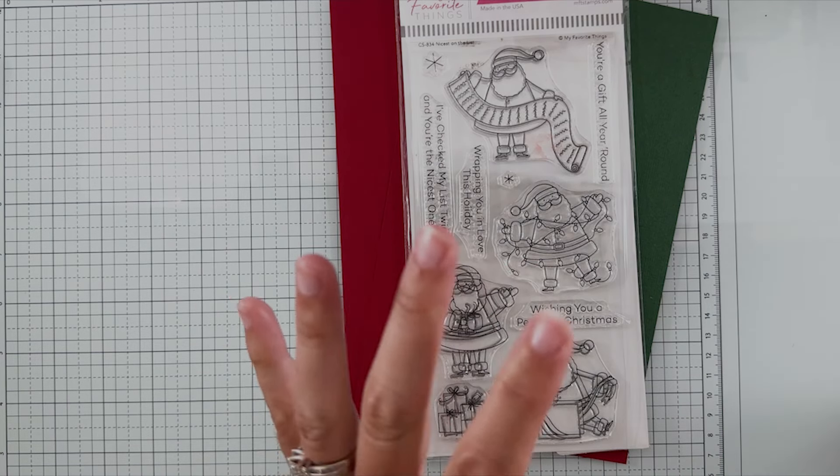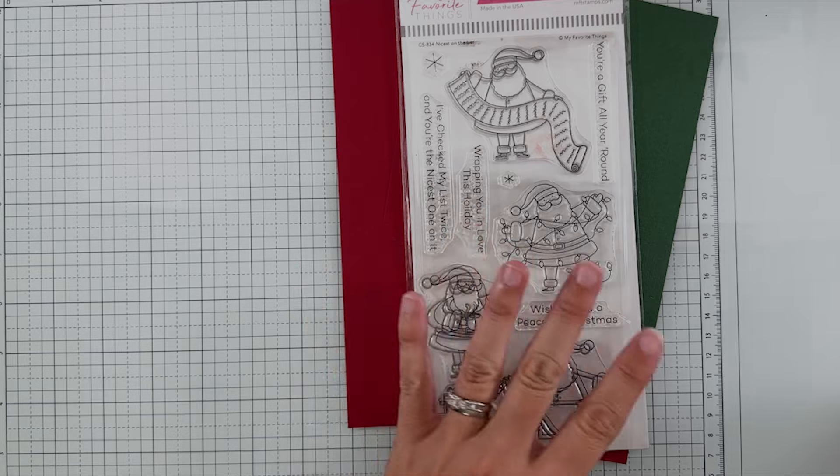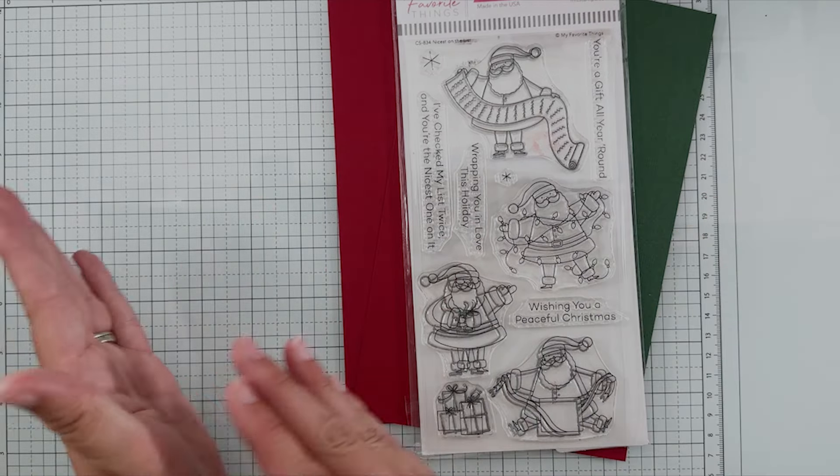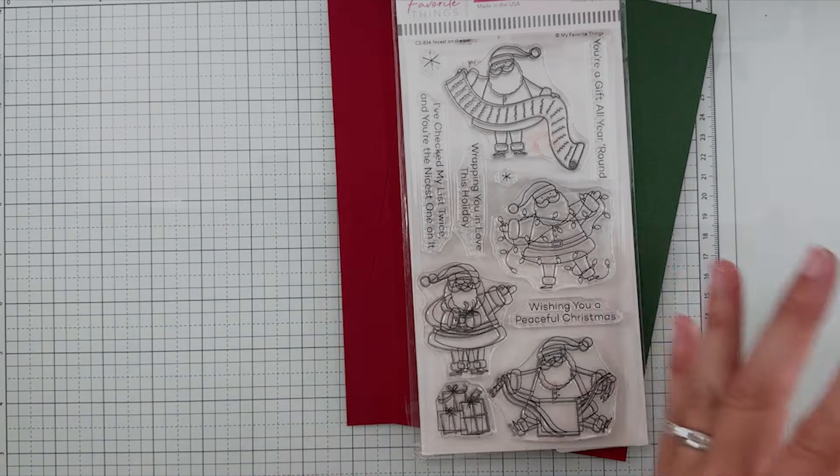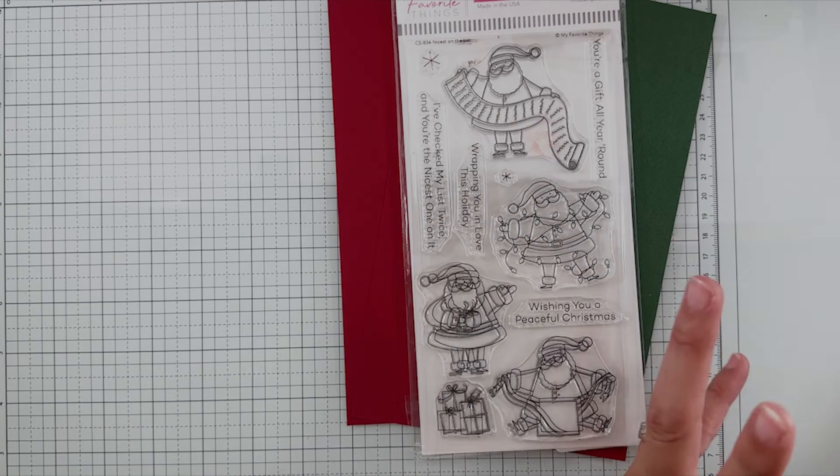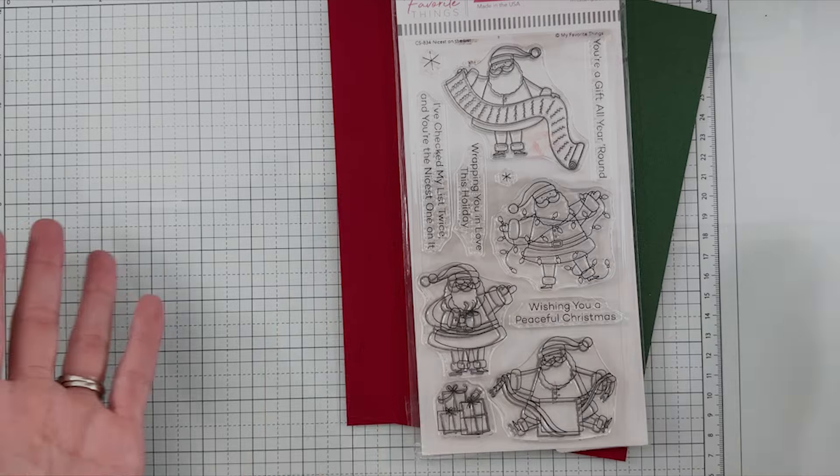So we are going to go step by step. Mass producing is easiest for me when I do everything in order, get things prepped, and then start putting together the cards and literally make it an assembly line. So let's get started.